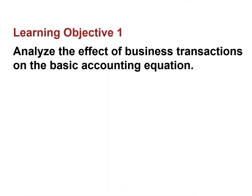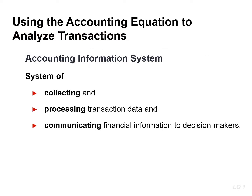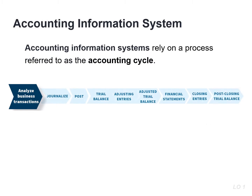In this learning objective, you will analyze the effect of business transactions on the accounting equation. The accounting information system collects and processes transaction data and communicates financial information to decision makers. Accounting information systems rely on a process referred to as the accounting cycle. As you can see from this image, the accounting cycle begins with the analysis of business transactions and ends with the preparation of a post-closing trial balance. We will explain each of these steps in this chapter as well as in Chapter 4.